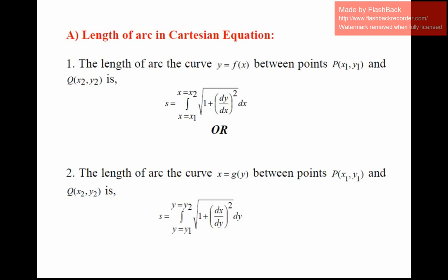Today we are going to focus on the Cartesian equation. There are two formulas for finding the length in Cartesian form. The length of arc of the curve y = f(x) between points P and Q is: s = integral from x₁ to x₂ of √(1 + (dy/dx)²) dx. For the curve x = g(y) between points P and Q: s = integral from y₁ to y₂ of √(1 + (dx/dy)²) dy.